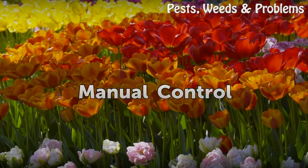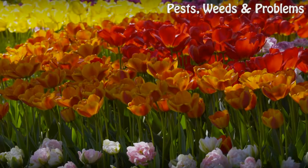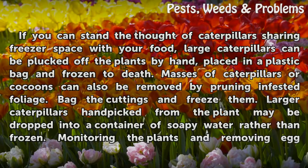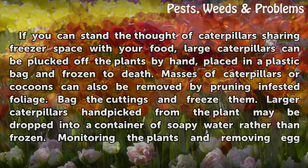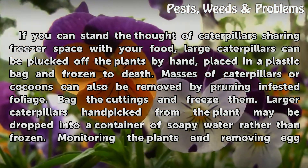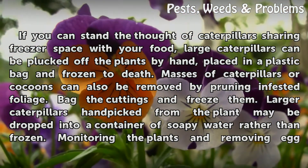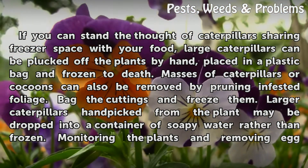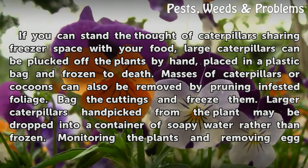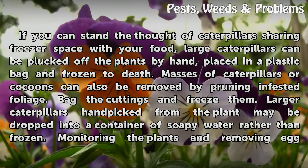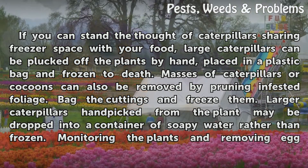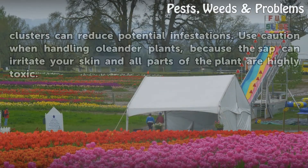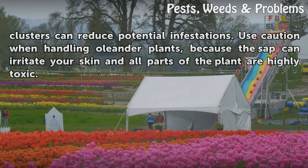Manual Control. If you can stand the thought of caterpillars sharing freezer space with your food, large caterpillars can be plucked off the plants by hand, placed in a plastic bag and frozen to death. Masses of caterpillars or cocoons can also be removed by pruning infested foliage — bag the cuttings and freeze them. Larger caterpillars handpicked from the plant may be dropped into a container of soapy water rather than frozen. Monitoring the plants and removing egg clusters can reduce potential infestations.